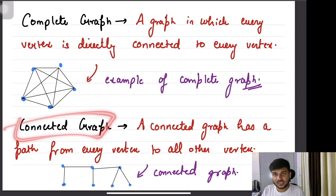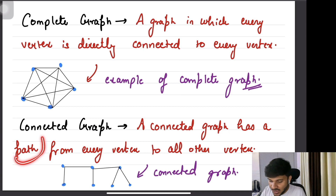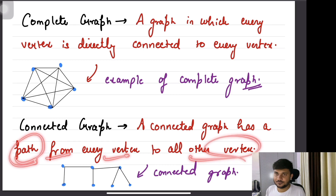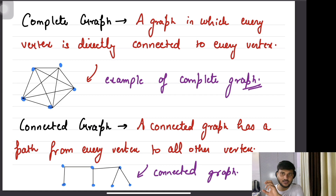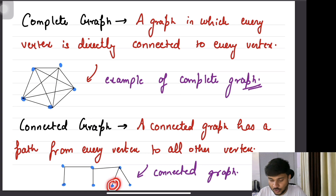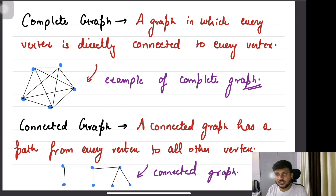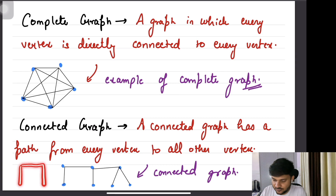What's a connected graph? A connected graph says that it is going to have a path from every vertex to all other vertices. When we say the word path, we don't mean a direct edge — starting from one vertex, we can go to any other vertex and there will be some path which may or may not involve more vertices. So there will be a path between any two nodes — that's a connected graph. What's a disconnected graph? If we have a few more components — let's say this part is different from this part — then from this vertex you can never reach any of these vertices. So it's a disconnected graph.